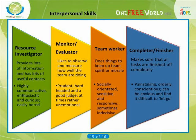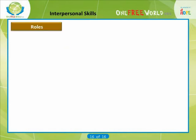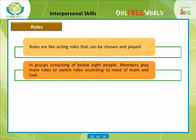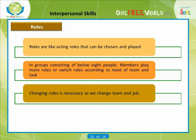These are the eight roles that Belbin stated led to a balanced and effective team. It is important to bear in mind that Belbin's roles are not something anyone is born into. They do not mean that if you spot one or more of the characteristics in yourself or others, you must maintain a certain role. The roles are rather like acting roles in that they can be chosen and played. Indeed, in many groups of smaller than eight people, some members need to play more than one role, switching between roles according to the needs of the team and the task. Changing roles from time to time is not only possible but sometimes necessary as we change jobs and teams.